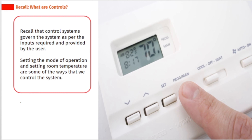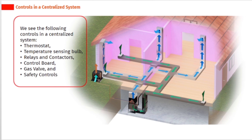Control systems govern the system as per the inputs required and provided by the user. Setting the mode of operation and setting room temperature are some of the ways that we control the system. In a centralized system, we see the following controls: thermostat, temperature sensing bulb, relays and contactors, control board, gas valve, and safety controls.